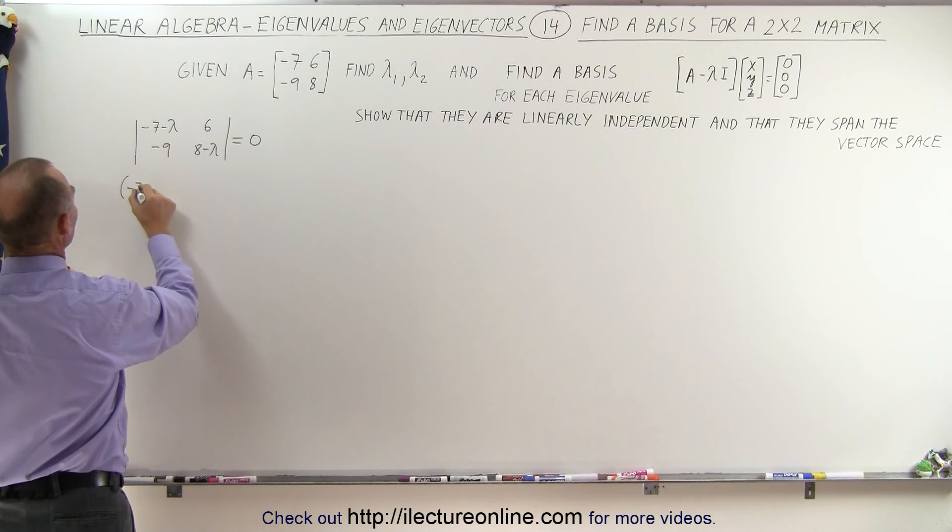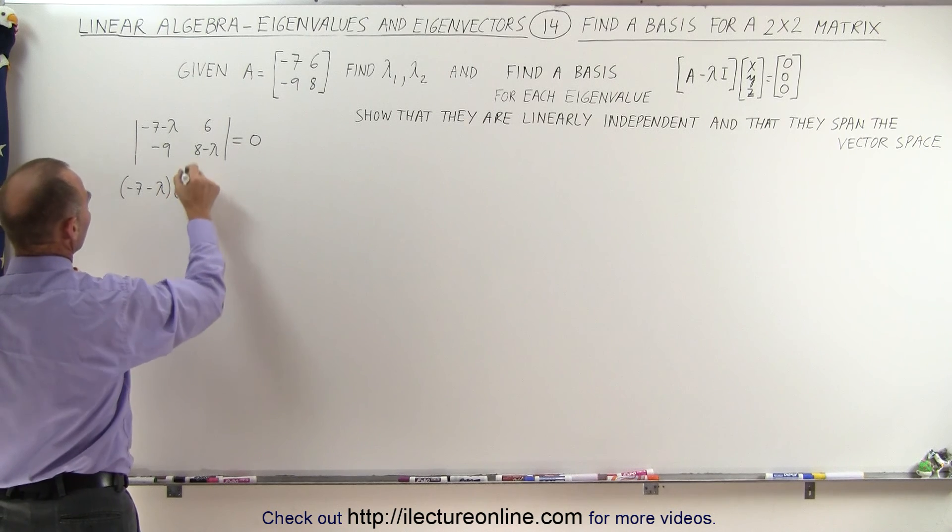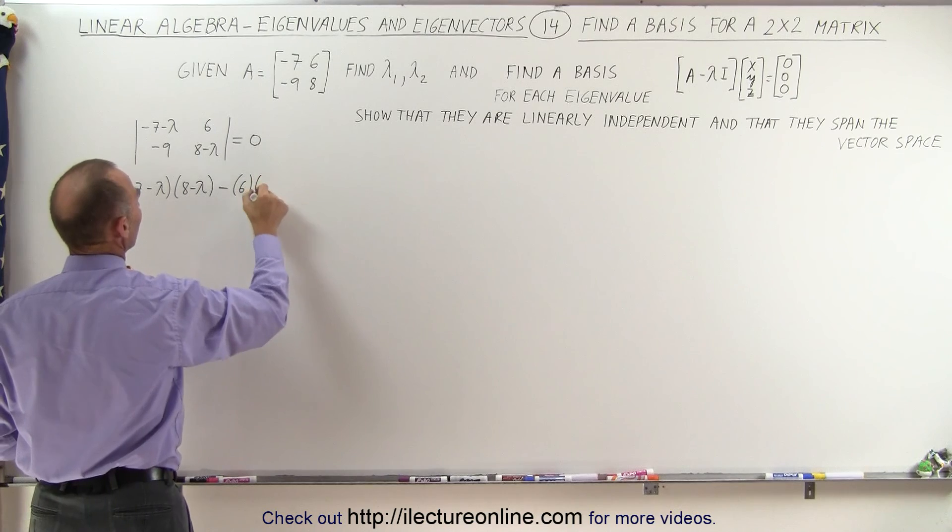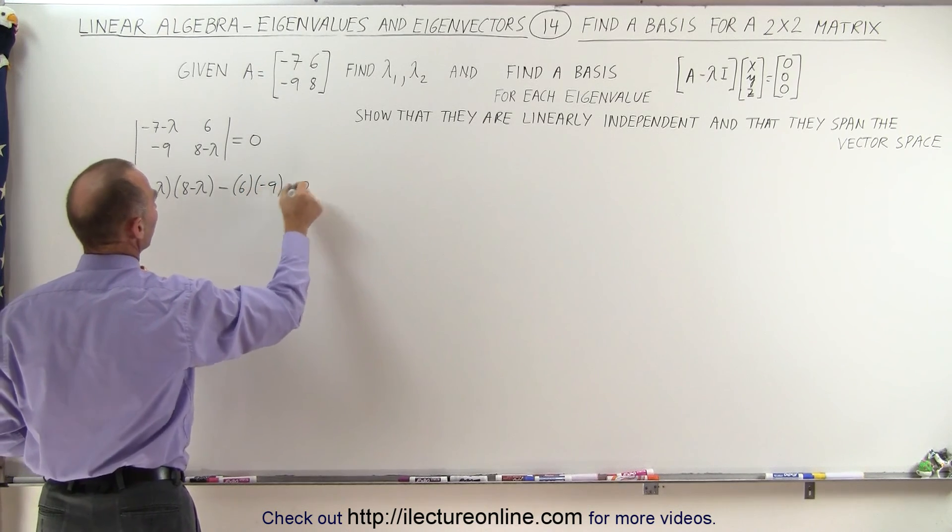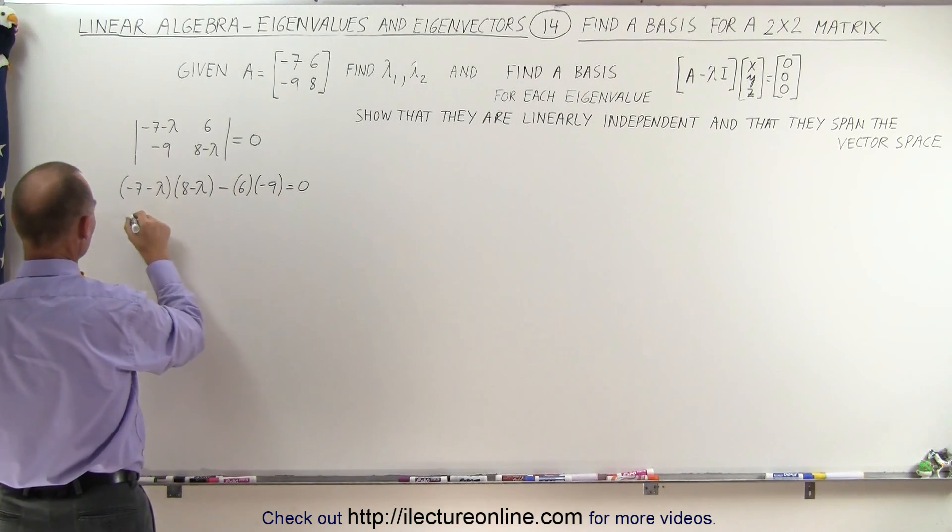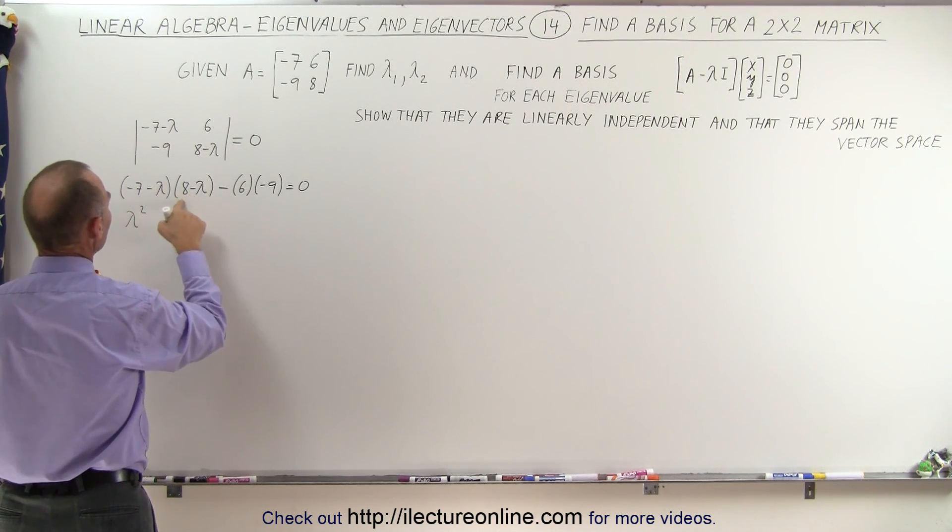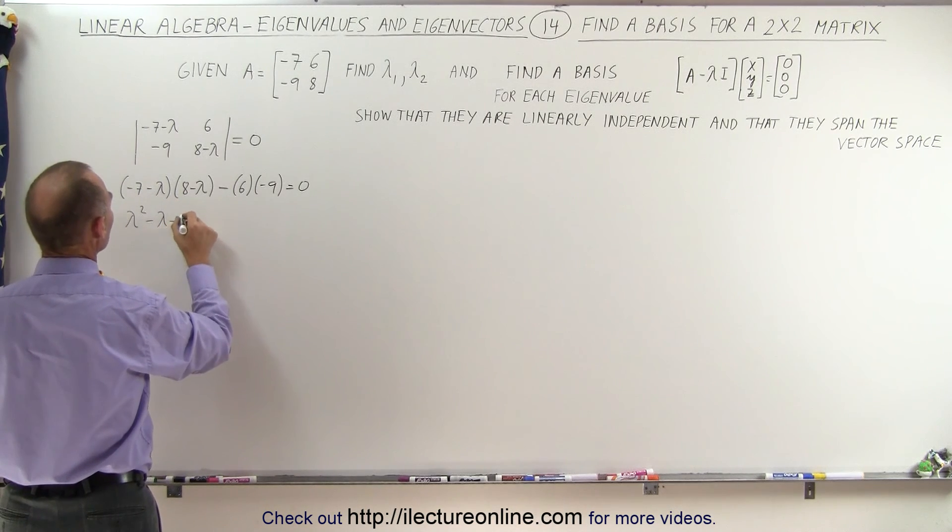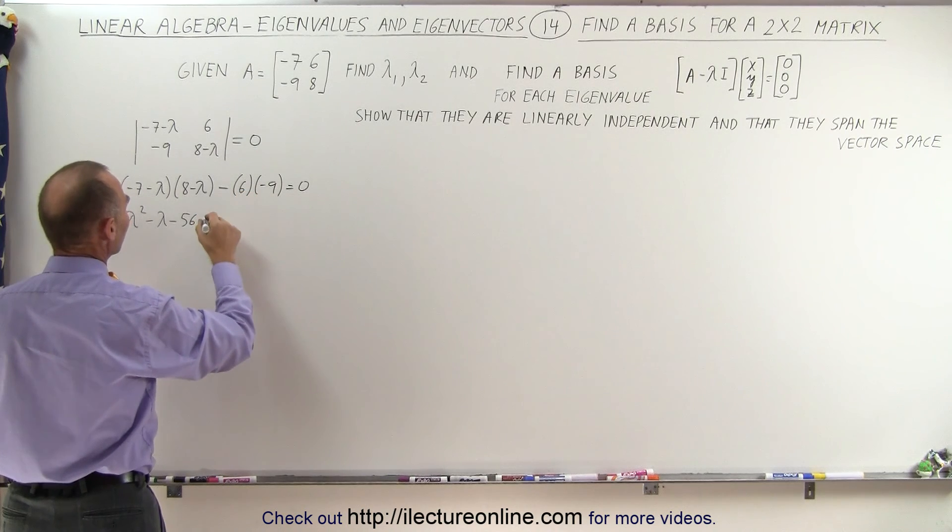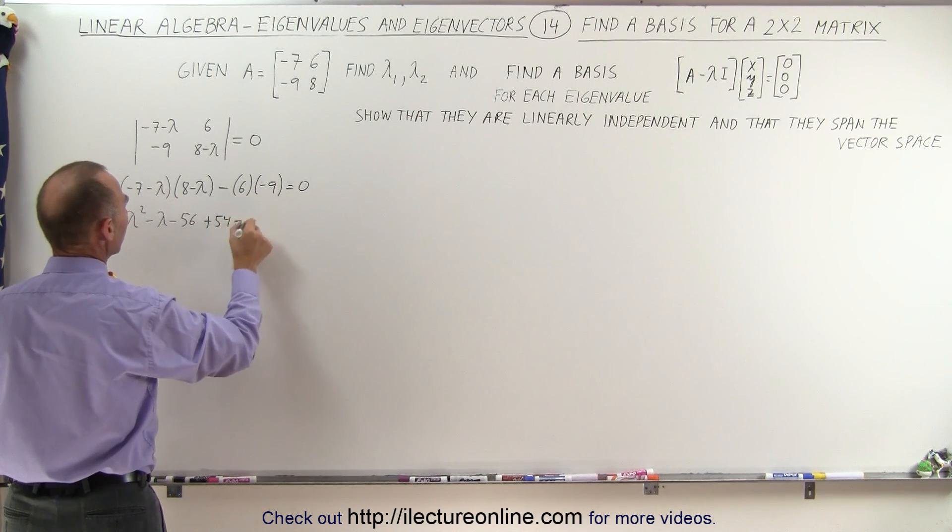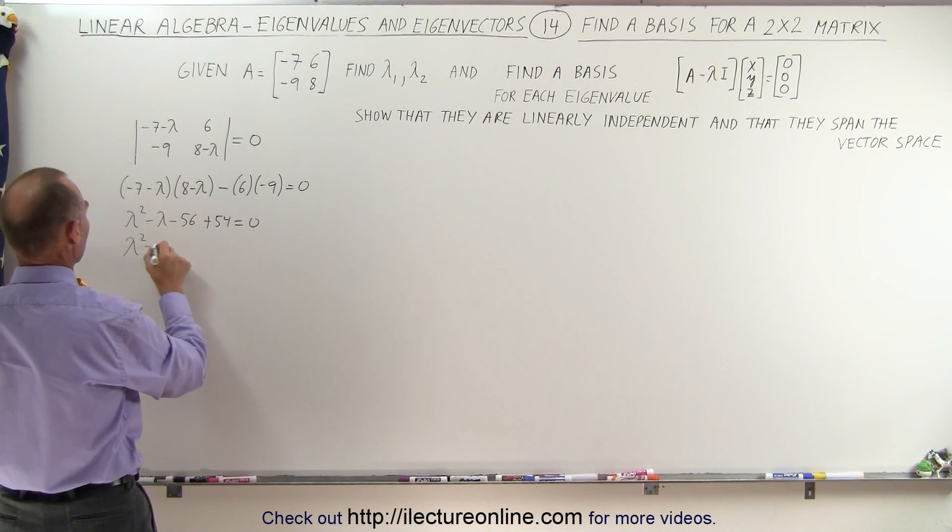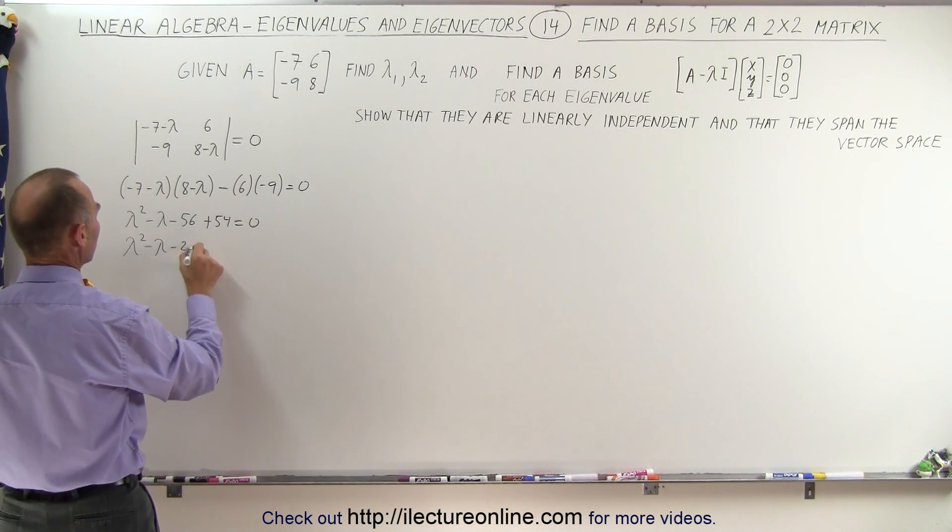So that means that minus 7 minus lambda, multiply it times 8 minus lambda, and subtract from that 6 times the minus 9 should equal 0. Multiplying the lambdas together, we get lambda squared. We get a plus 7 lambda and a minus 8 lambda, that would be minus lambda, and minus 56 minus times the minus is plus 54 equals 0. That's simplified as lambda squared minus lambda minus 2 equals 0.